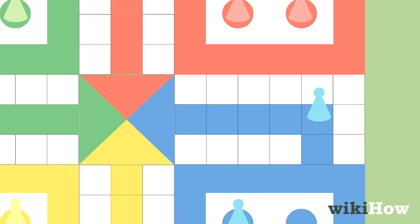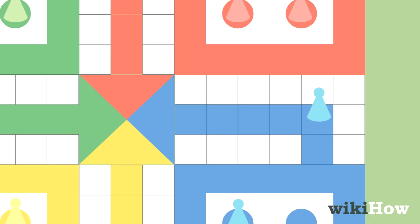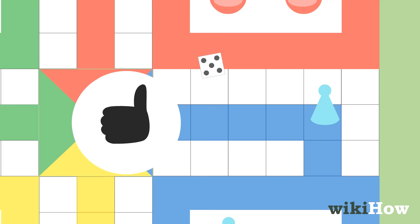Once a piece reaches the color coded row at the end of their trip around the board, a player must roll a die with the exact number of spaces required to reach the home base in the middle. When a piece successfully reaches the home base, it is removed from play.